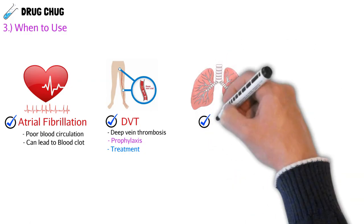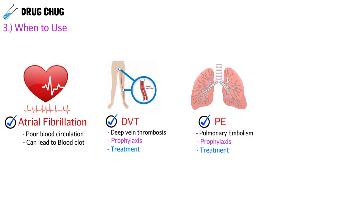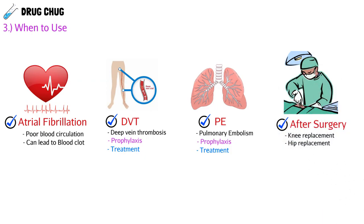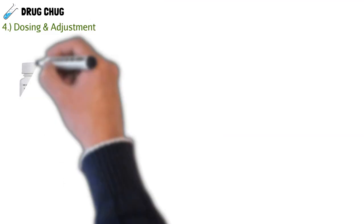Another indication is pulmonary embolism — a blood clot that travels to the lungs, which is very serious with a high rate of sudden death. Factor Xa inhibitors can be used for both prophylaxis and treatment of pulmonary embolism. Finally, these drugs are also used after surgery, most commonly after knee or hip replacement surgery, where stress on the body increases clotting risk.